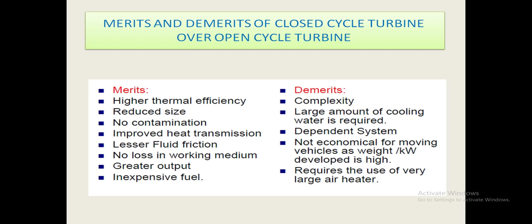Merits and demerits of closed cycle turbine over open cycle turbine. Main merits: higher thermal efficiency, reduced size, no contamination, improved heat transmission, lesser fluid friction, no loss in working medium, greater output, and inexpensive fuel. Main demerits: complexity, large amount of cooling water is required, dependent system, not economical for moving vehicles as weight per kilowatt developed is high, and it requires the use of very large air heaters.